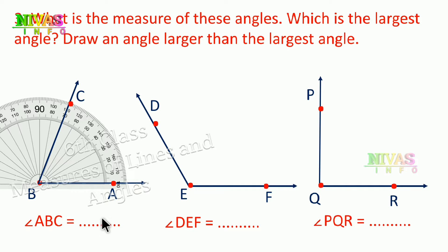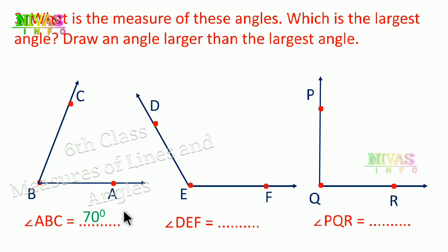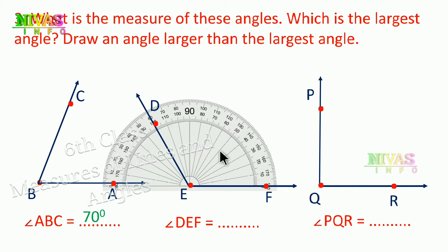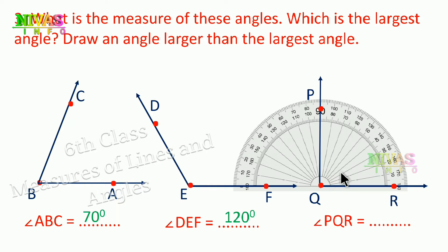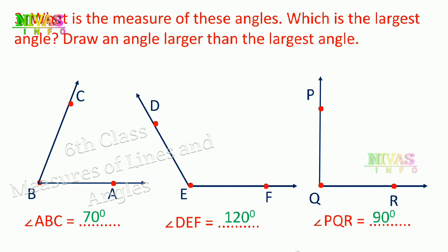In the same way, measuring the second angle with the protractor: it shows 120 degrees. Measuring the third, it shows 90 degrees. So the largest angle is the second one at 120 degrees.